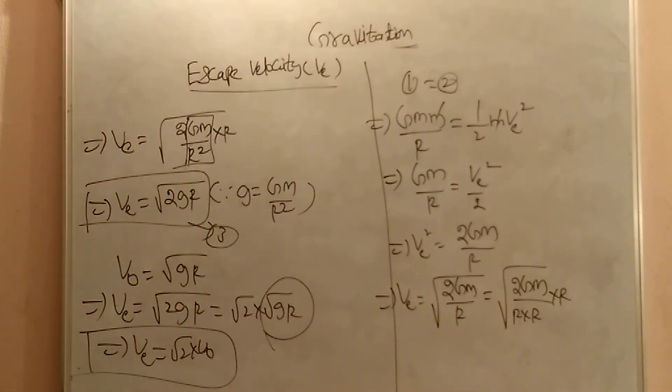Generally, escape velocity on the surface of the earth is 11.2 km per second. So, depends upon the planet, this value changes.